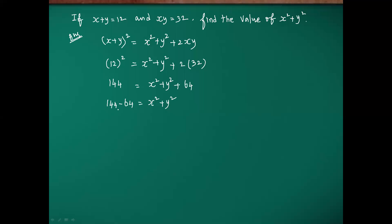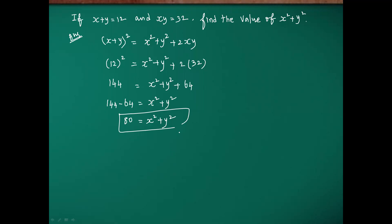Send 64 to the other side: 144 minus 64 equals x square plus y square. Subtracting, 4 minus 4 is 0, and 14 minus 6 is 8. So 80 equals x square plus y square. This is our required value.